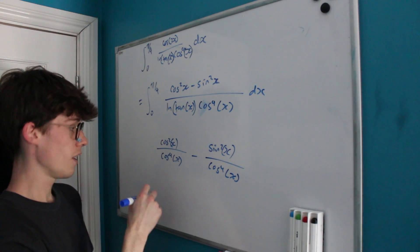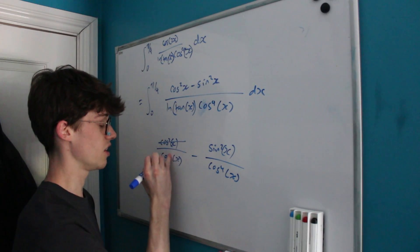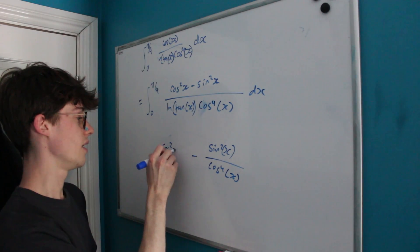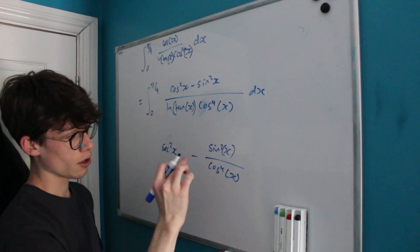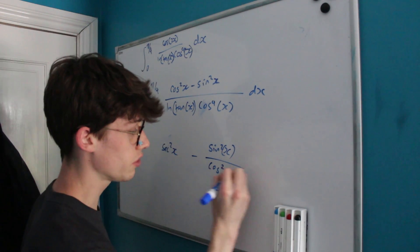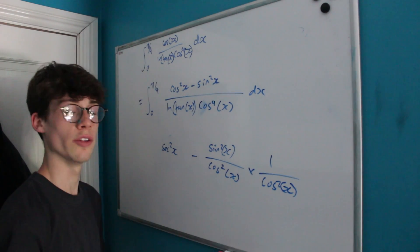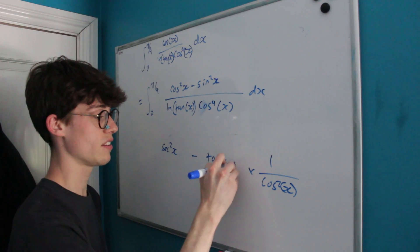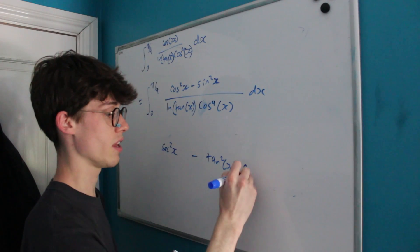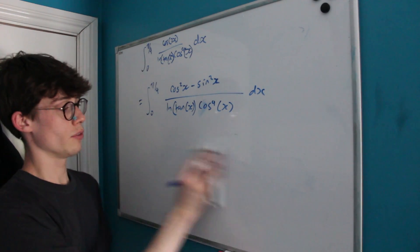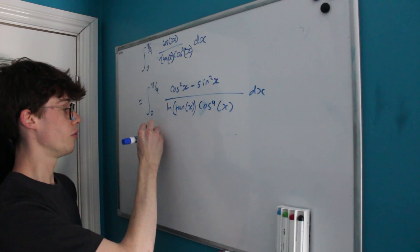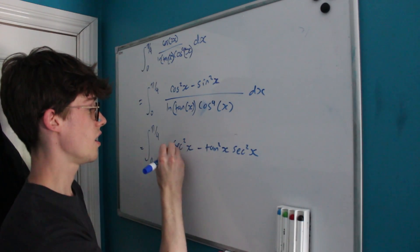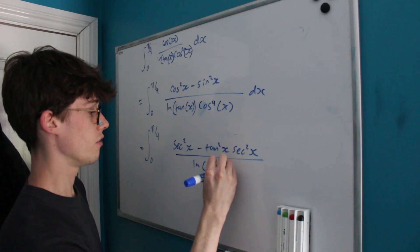With cos²x over cos⁴x, we get simple cancellation — we end up with 1 over cos²x, which is sec²x. And for the other term, sin²x over cos⁴x is sin²x over cos²x times 1 over cos²x, which equals tan²x times sec²x. So we can rewrite our integral as the integral from 0 to π/4 of (sec²x minus tan²x·sec²x) divided by ln(tan x) dx.